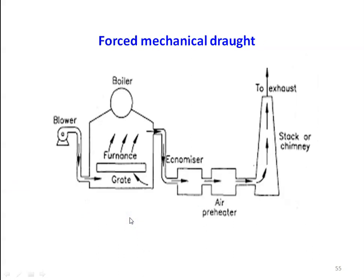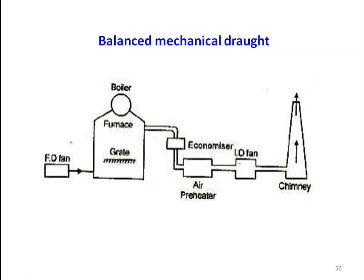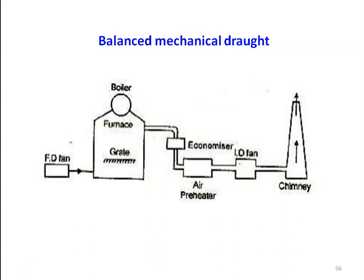To manage the drawbacks of both induced and forced draught, we install the balanced mechanical draught system, where both the FD fan (forced draught fan) and the ID fan (induced draught fan) are installed. The FD fan forces air through the grate, economizer, and air preheater, while the ID fan draws the flow and supplies the hot gases to the atmosphere via the chimney. So in balanced draught, two fans are used: one FD fan and one ID fan.